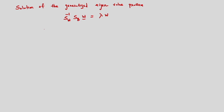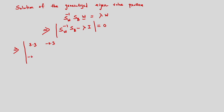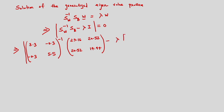For this solution we need to consider SW inverse SB w = lambda w. That is nothing but (SW inverse SB minus lambda I) = 0. This can be written as: the matrix [[3.3, -0.3], [-0.3, 5.5]] inverted, times [[29.16, 20.52], [20.52, 14.44]], minus lambda times the identity matrix [[1,0],[0,1]], equals zero.